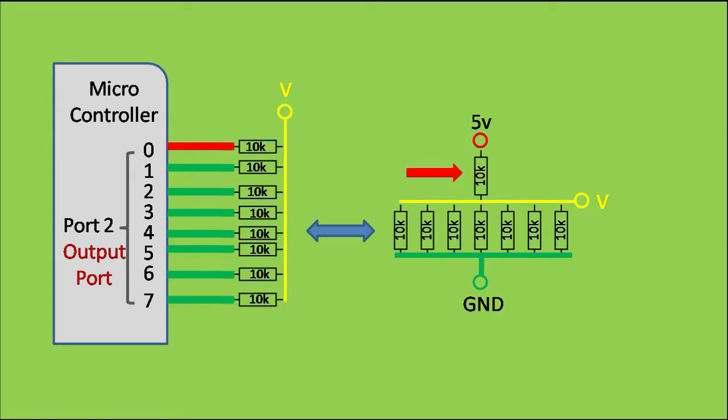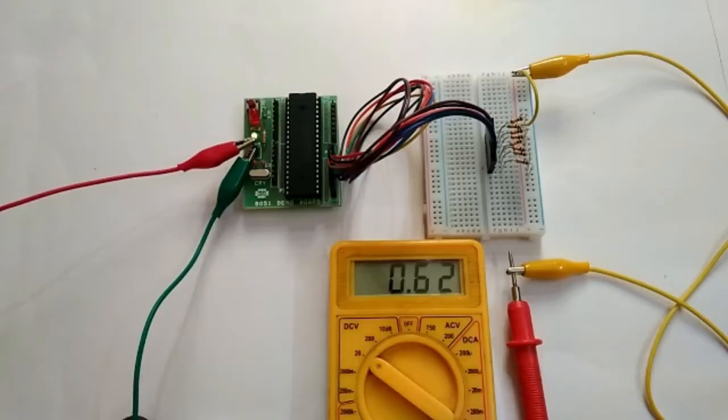There is one 10k resistor between 5V and the common point and other 7 ten-k resistors to ground. These 7 resistors are in parallel, hence will give an equivalent resistance of 1.43 kohm. From voltage divider rule, we will get a voltage of 0.62V, which is exactly what I got.